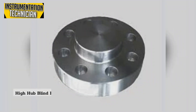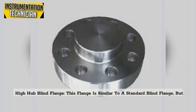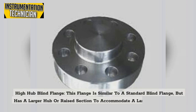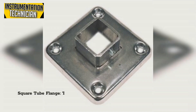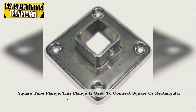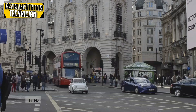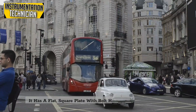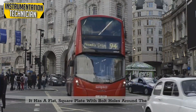High hub blind flange: This flange is similar to a standard blind flange but has a larger hub or raised section to accommodate a larger pipe or fitting. Square tube flange: This flange is used to connect square or rectangular tubing to a piping system. It has a flat square plate with bolt holes around the perimeter.